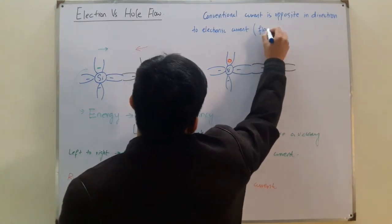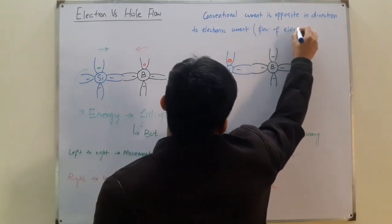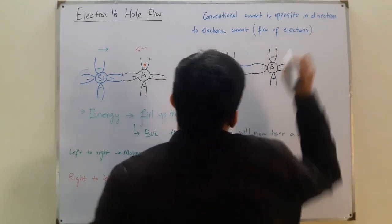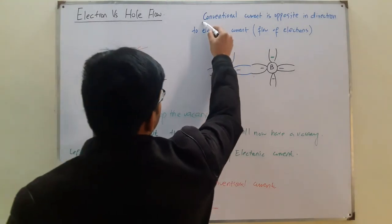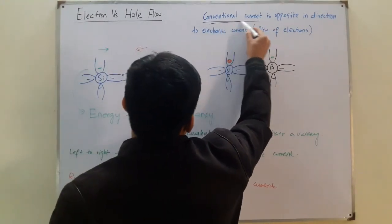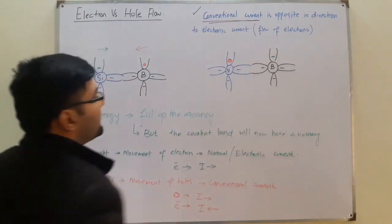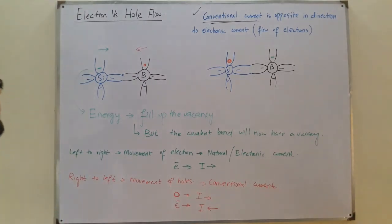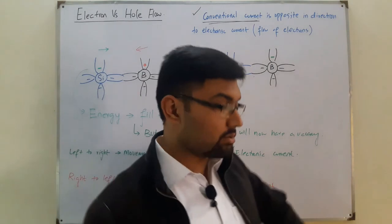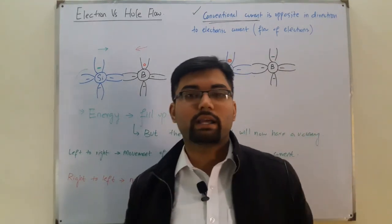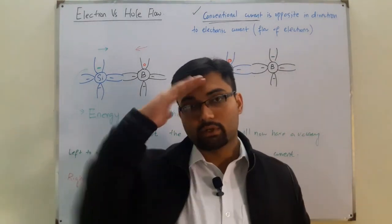So that's all about it. The one that we will be following is this conventional current in all our suppositions. So that's all about this one. This was just a small video on the electron versus hole flow. See you in the next lecture with another minute topic. Till then, take care. Goodbye.